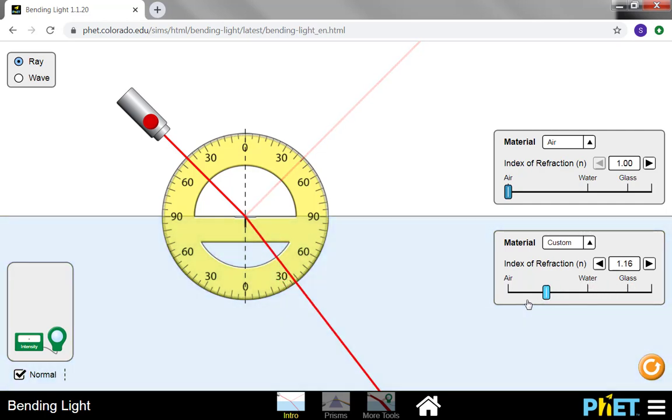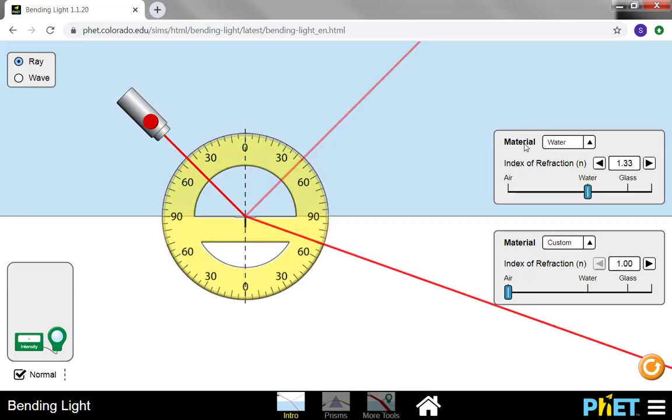So now let's go back to being just in air and switch it around. Let's start in water in this case and now go into air. Again, we see the reflected angle is the same as the incident angle, but now look at the refracted ray. Instead of bending towards the normal, we've bent away from the normal. If I increase the difference between the indices in this case, we see that we refract further and further and further from the normal.